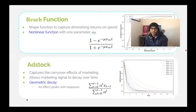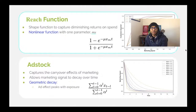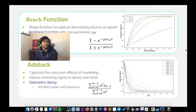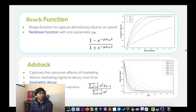Just to touch on the transformation functions: the first function models diminishing returns using a logistic-like function with a single parameter mu that controls how quickly the curve saturates. When mu is low (around 1) you get a fairly linear effect; as it increases to around 7, you get a very saturated curve that rises quickly and plateaus quickly.